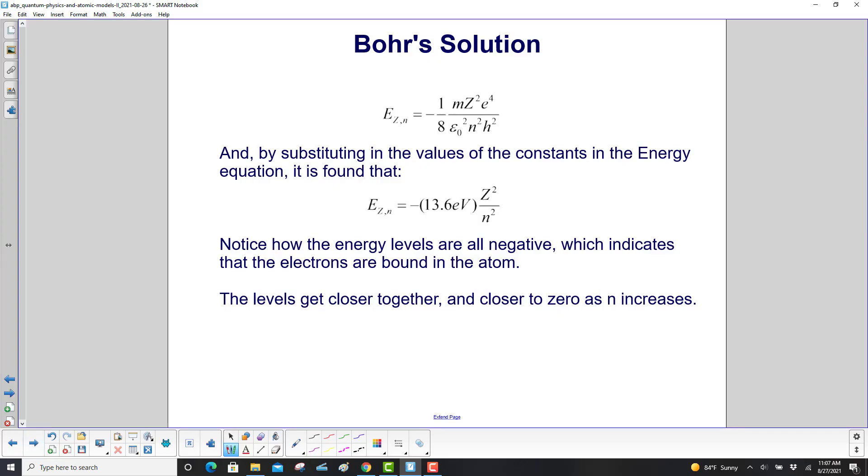And we're not done with our simplification. We had this expression for the energy with all kinds of letters in it, but we'll substitute in the values of the constants, and you'll get the energy is minus 13.6 electron volts times z² over n². Now, what does this negative mean over here? That means the electrons are bound in the atom. That's all that means. They're stuck to the atom.